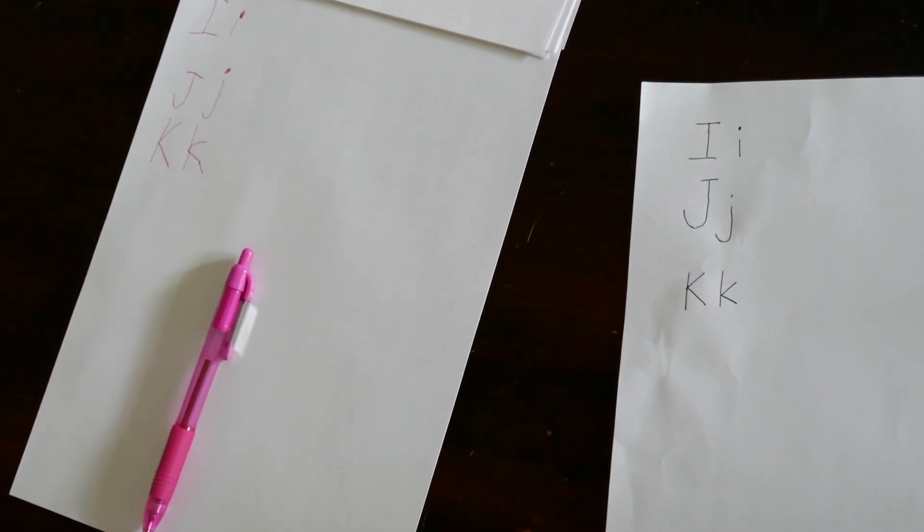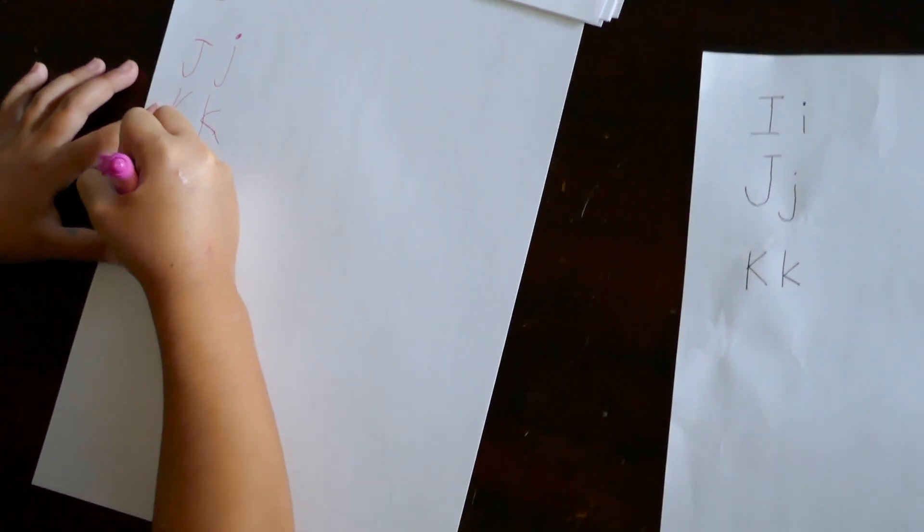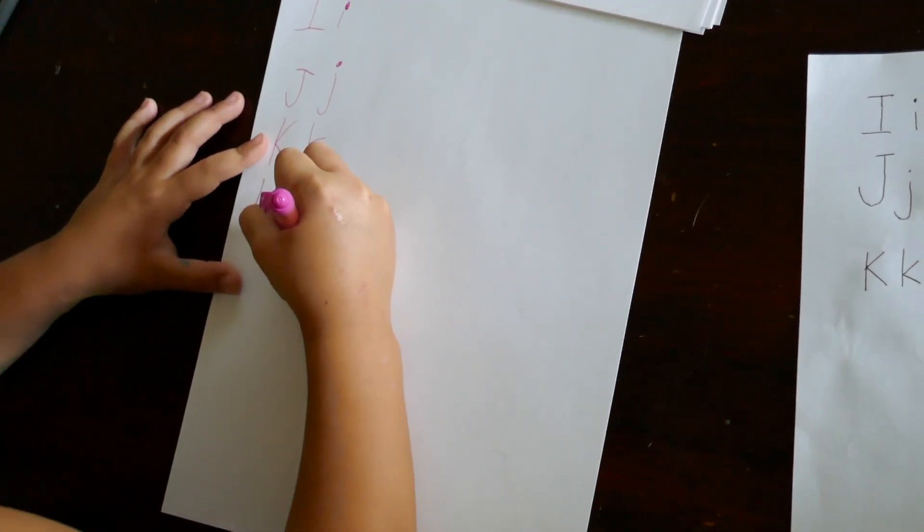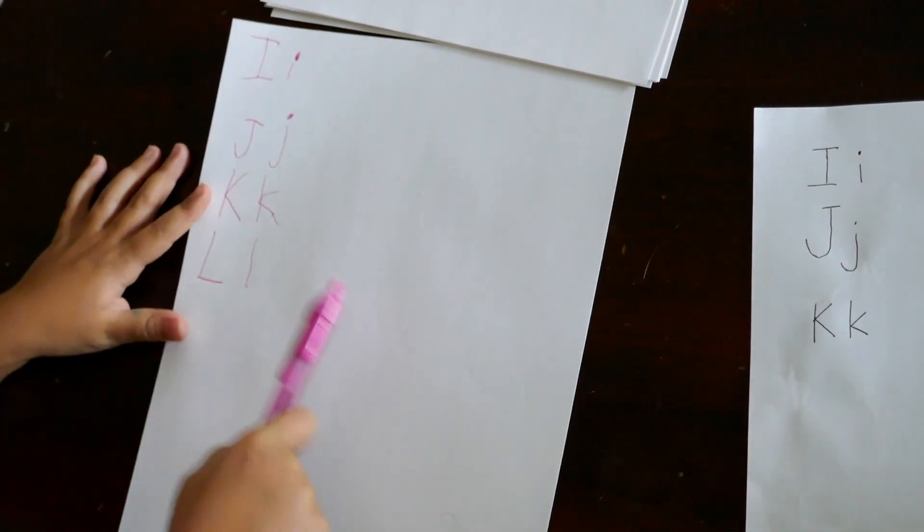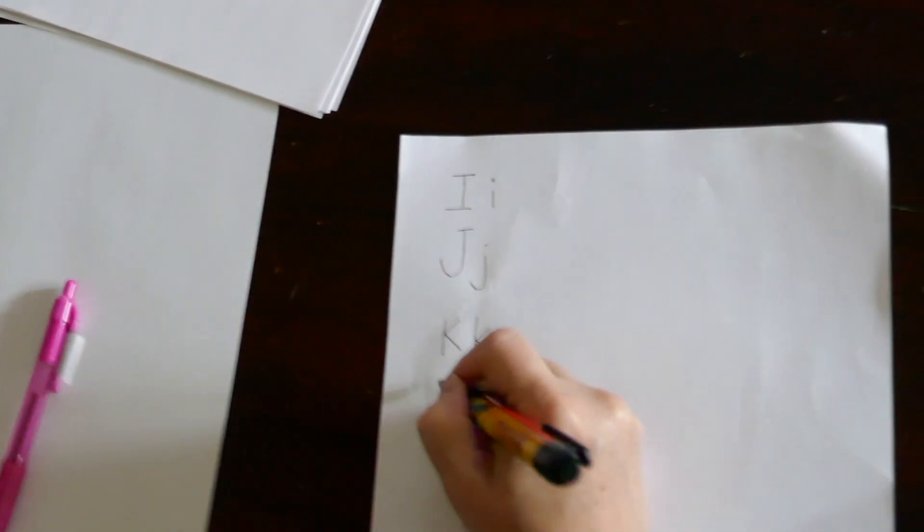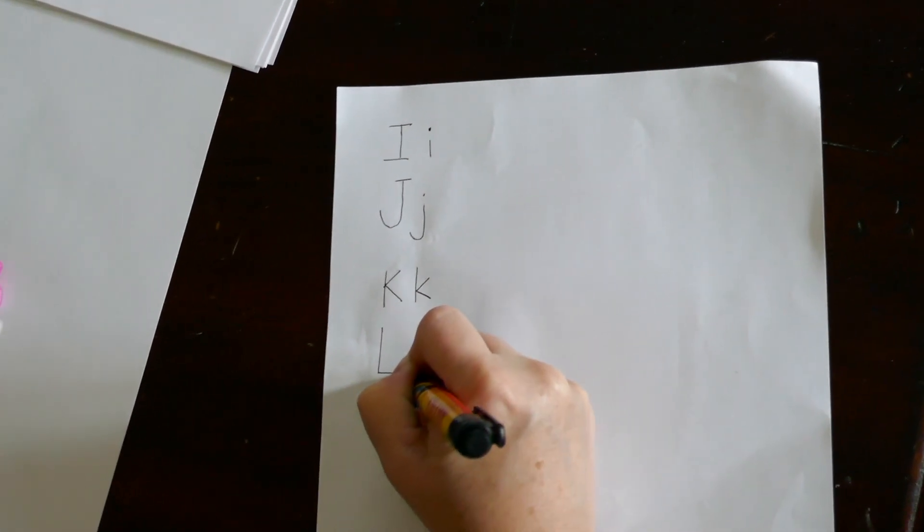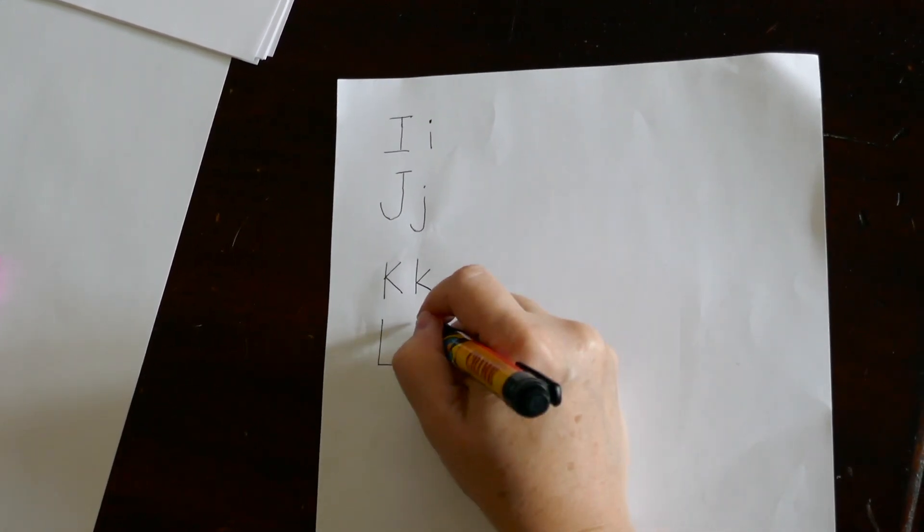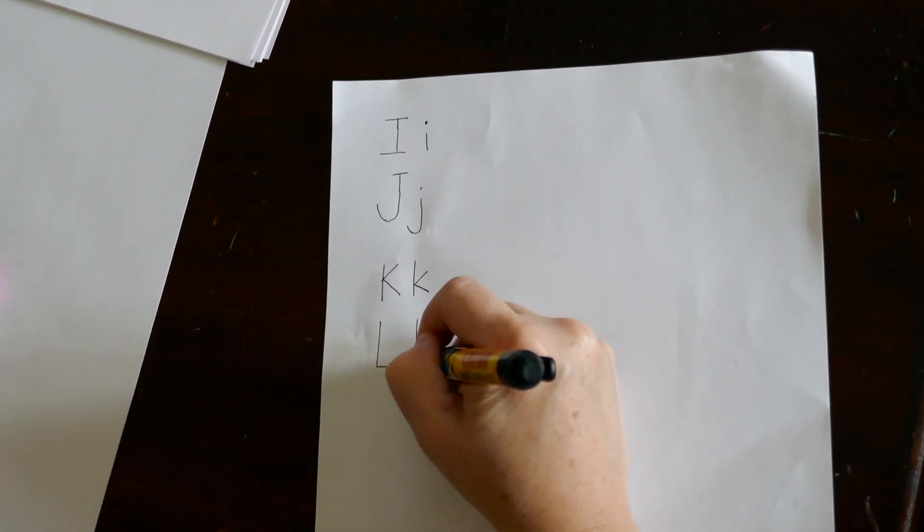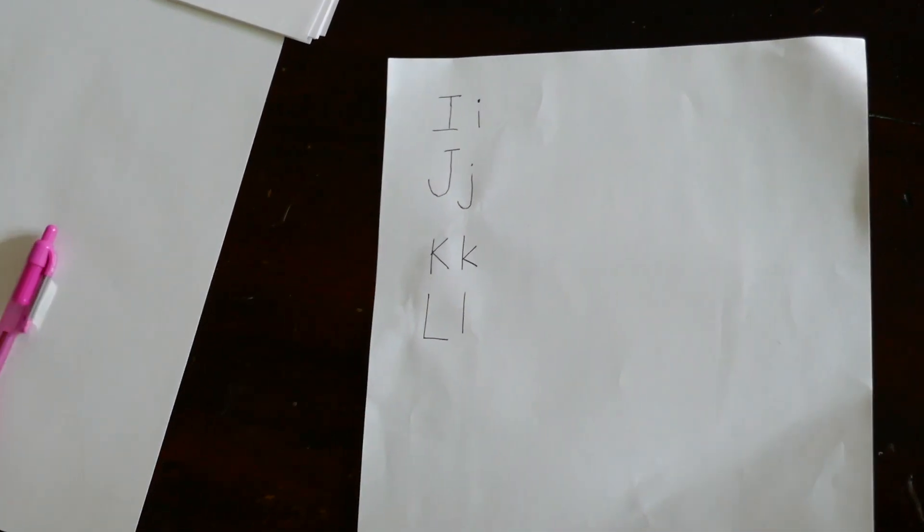After K comes L. Very good. That's right. So for an L, it's just a line down with a short line across, and the lowercase l is just one line going down.